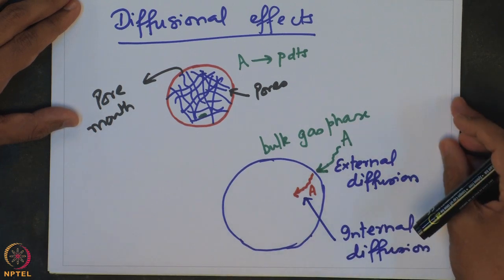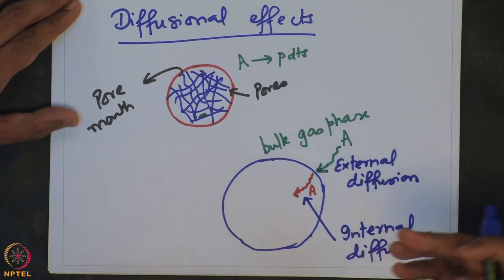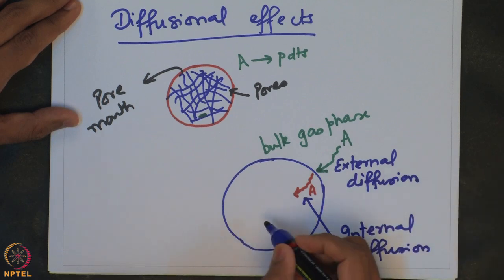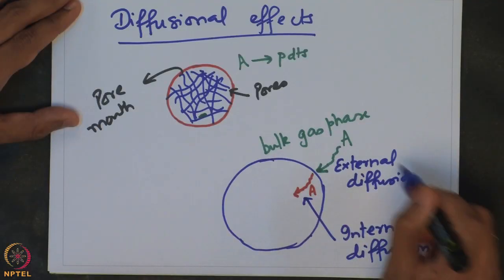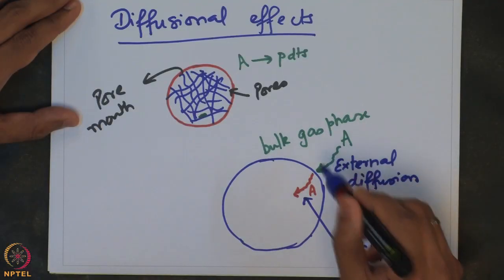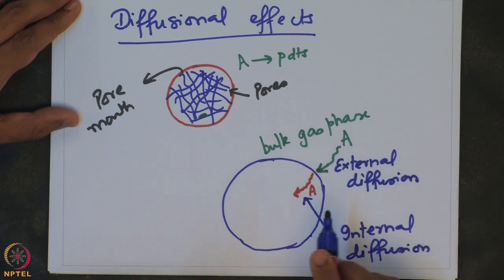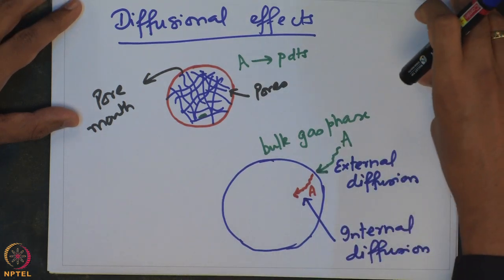In the previous lectures, we looked at how to find out the rate law if the steps involved in adsorption, the surface reaction, or the desorption process are each rate controlling. Now, in several lectures, we will see what happens if the external diffusion is rate controlling or what happens if the internal diffusion is rate controlling.